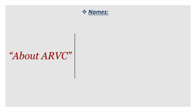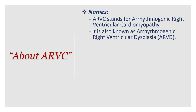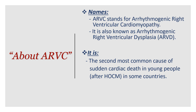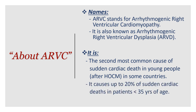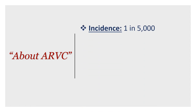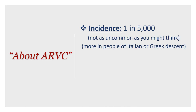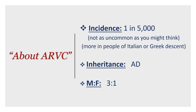ARVC stands for arrhythmogenic right ventricular cardiomyopathy, also known as ARVD. It is the second most common cause of sudden cardiac death in young people after hypertrophic obstructive cardiomyopathy in some countries, and causes up to 20% of sudden death in people under 35 years old. The incidence is 1 in 5,000 in the general population. It is more common in people of Italian and Greek descent. The inheritance is autosomal dominant, so family screening is required. The male-to-female ratio is 3:1.